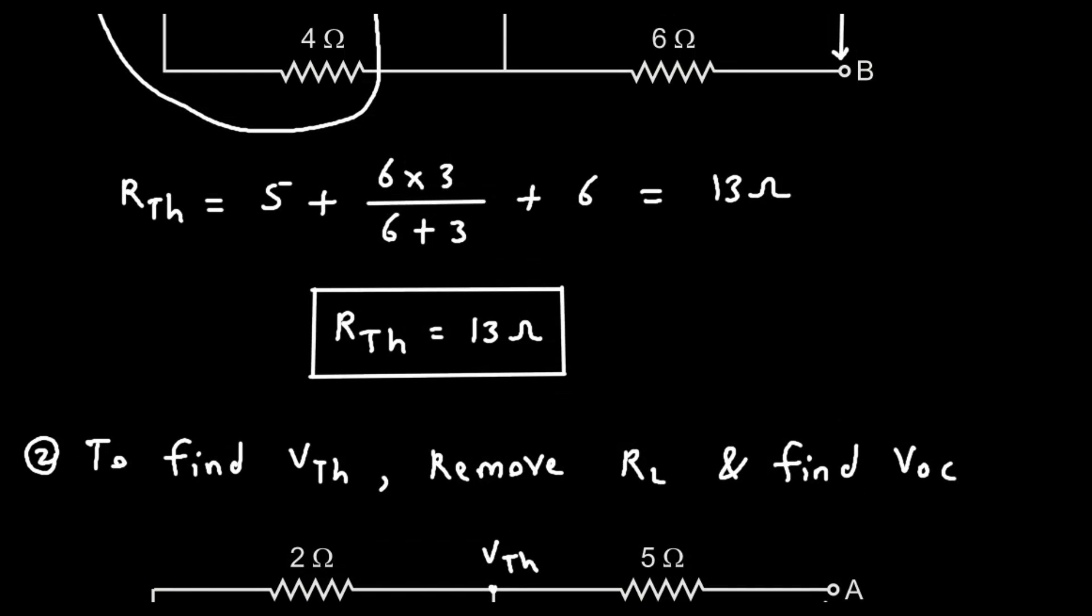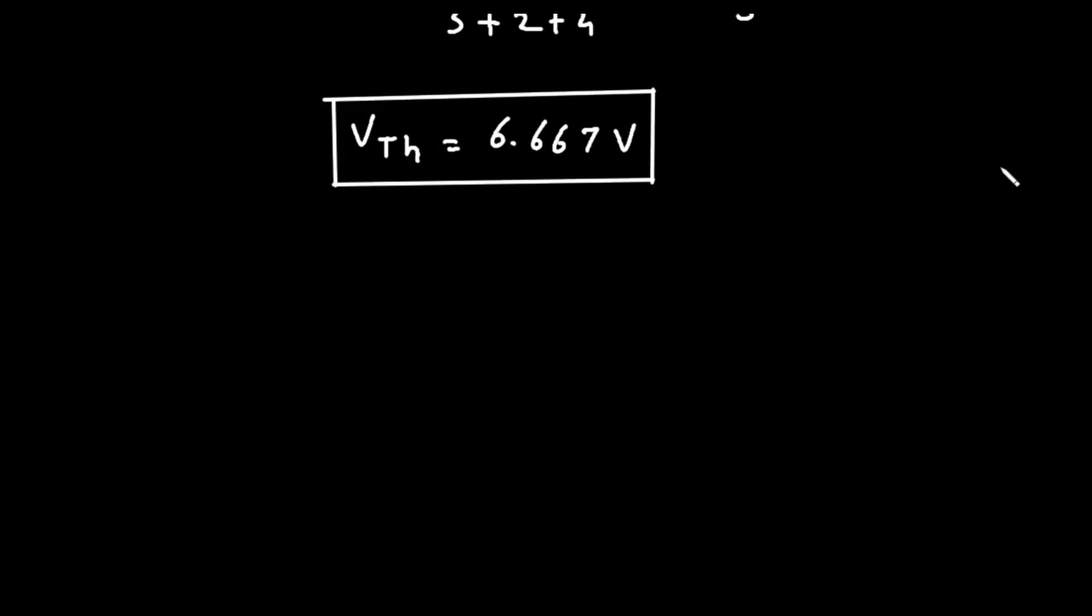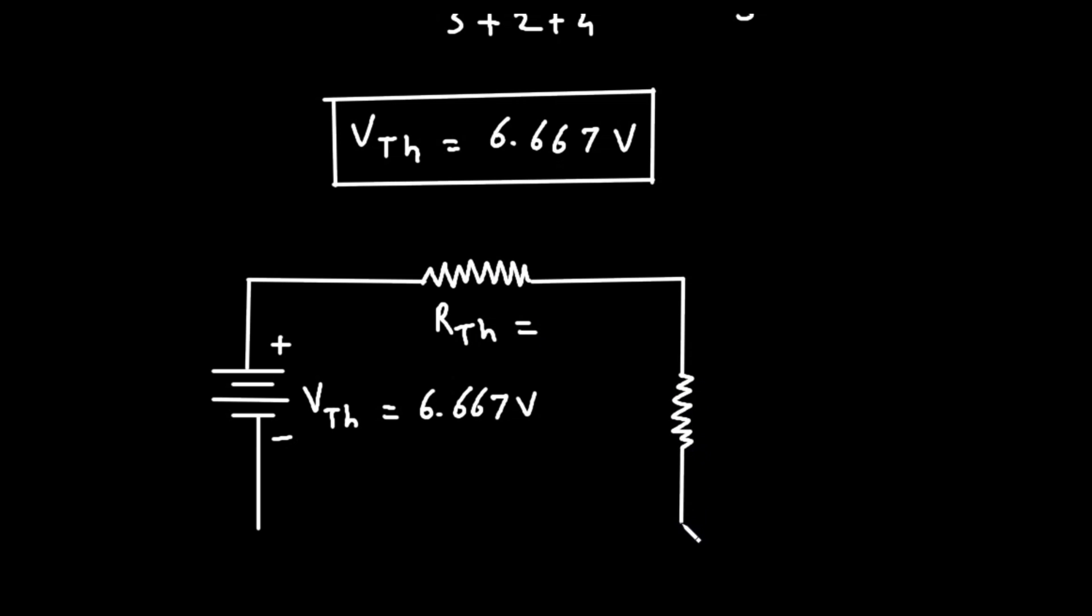Now we got the value of VTH, we also got the value of RTH. So we can draw Thevenin equivalent circuit. Now here, let's say this is our VTH. This is VTH, this is plus, this is minus. And VTH is equal to 6.667 volt. And this is our RTH. And this will be our load resistor RL. So this is load resistor RL. We don't know the value of RL because RL is absent. This is terminal A and this is terminal B.